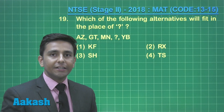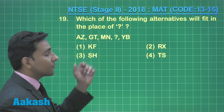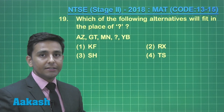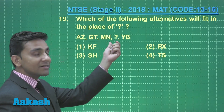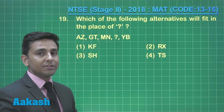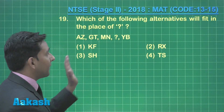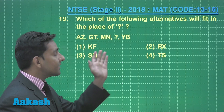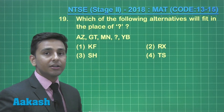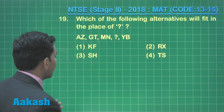Now let us take question number 19. This question is based on alphabet series. Here we have to find the missing term of the given sequence. First of all, we will find the pattern in the given terms, then we can easily predict the missing term of the given sequence.